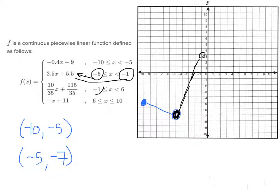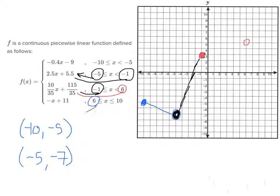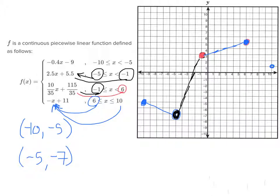Now I plug negative 1 into the third function and get negative 1, 3. When I plug 6 into this function, I get 6, 5 — that's right 6 and up 5 — and that's an open circle. Then I plug 6 into the fourth function: negative 6 plus 11 is 5, giving 6, 5. When I plug 10 in, I get 1, so it's the point 10, 1. I connect those two, and this represents the complete graph of the piecewise function.